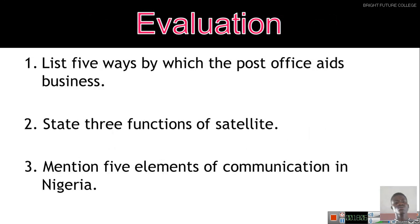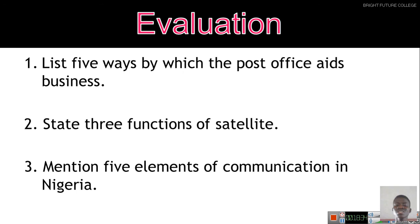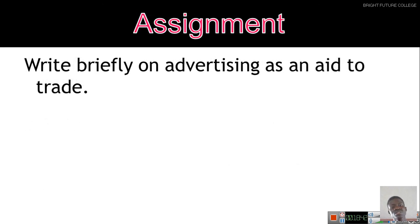Now ask yourself the following questions to assess what you've learned: List five ways the post office helps business. Look at the functions of satellite in business. Mention and explain seven elements of communication in Nigeria as covered. There is also an assignment: communication is an aid to trade, and another auxiliary to trade is advertising — read briefly on advertising as an aid to trade and make short notes, as it will help in a subsequent class. Do have a nice time learning from home.